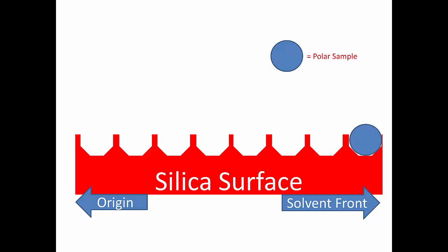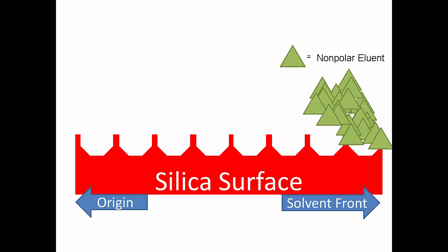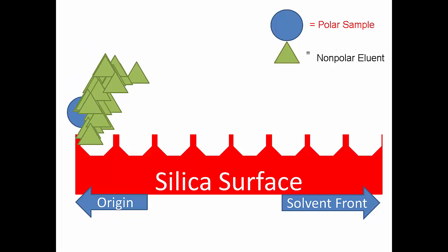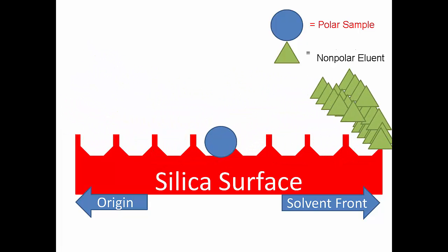So a polar sample would have a similar shape, a circle, to the stationary phase shape, half octagon. Now if a non-polar eluent was used, it would not have a similar shape, a triangle, and therefore there is no competition with the sample for the stationary phase. So the sample would be held tightly to the stationary phase.